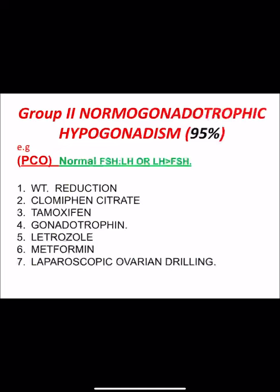Number five, letrozole — an aromatase inhibitor, 2.5 mg tablet, given as two tablets morning and night from day 2 to day 6 of the cycle, monitored by ultrasound on day 12. Number six, metformin — an insulin-sensitizing agent, 500 mg three times daily for three to six months. This is especially useful in obese patients with PCOS as it lowers insulin levels, subsequently lowers androgen levels, and enhances ovulation.